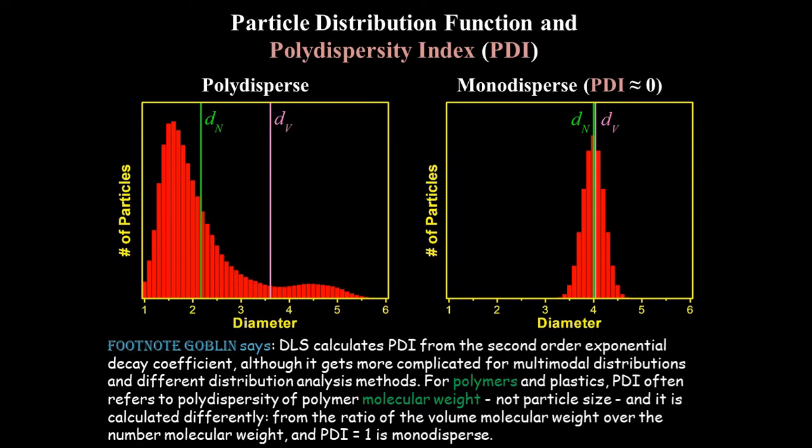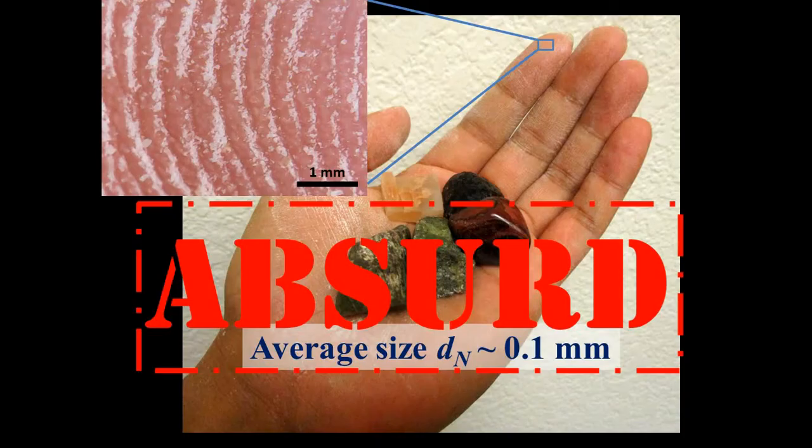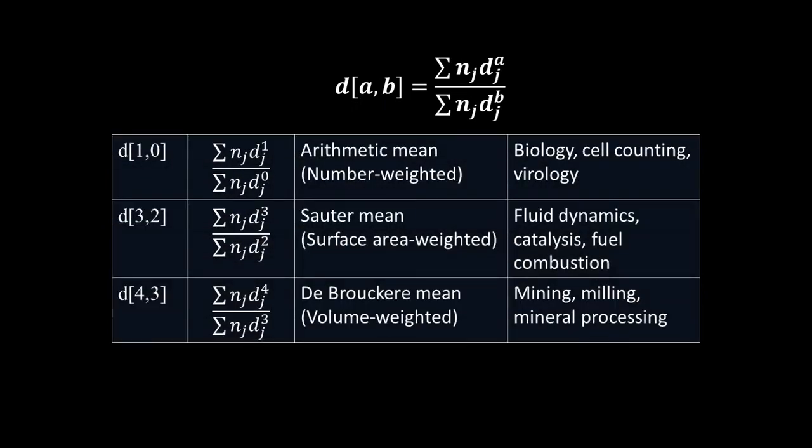Now you might say, but dv is a weighted average, and isn't that bad? Like putting your finger on the scale? Well first, let me remind you, absurd. Secondly, it could be said that the number average is also weighted, just with a unique biasing factor. This equation for calculating averages can be generalized for any power of weighting factor. The volume average is also sometimes labeled as d43. The number average is d10.